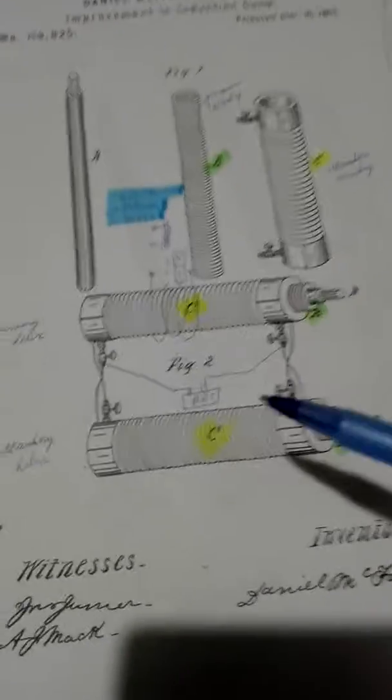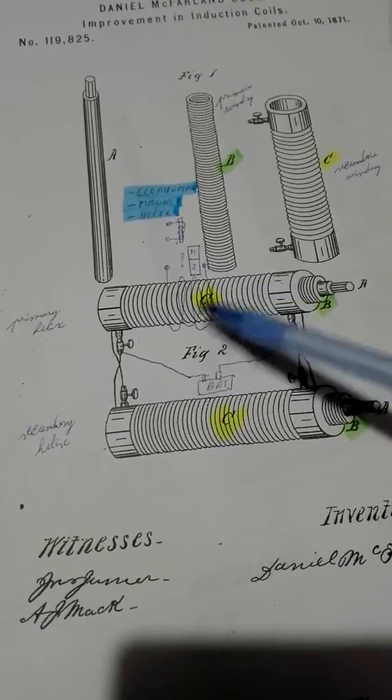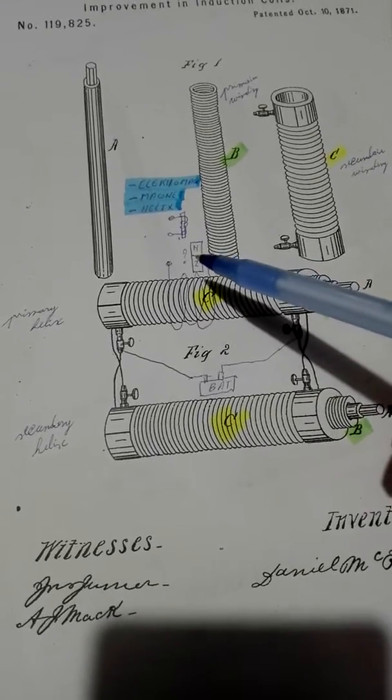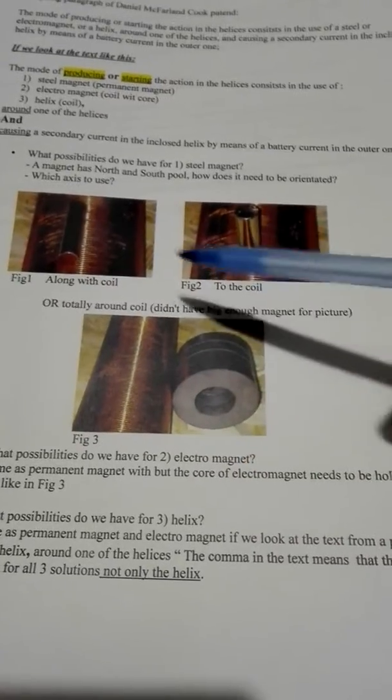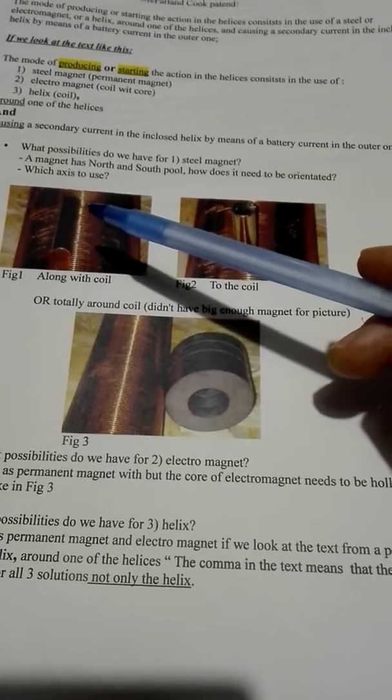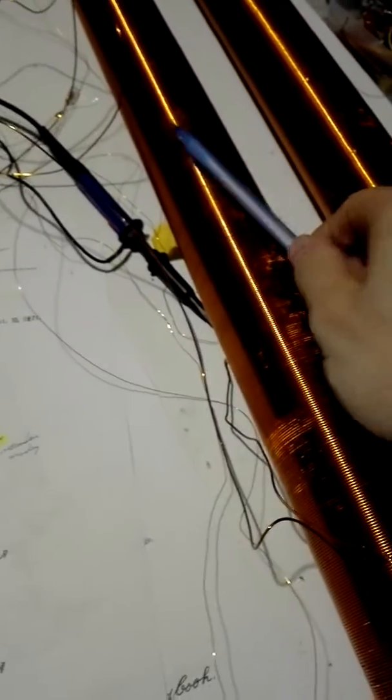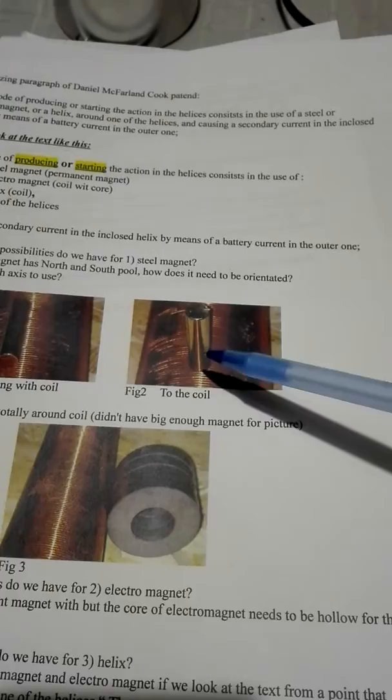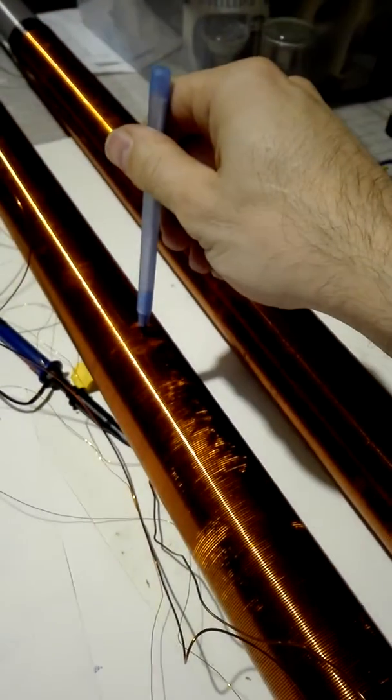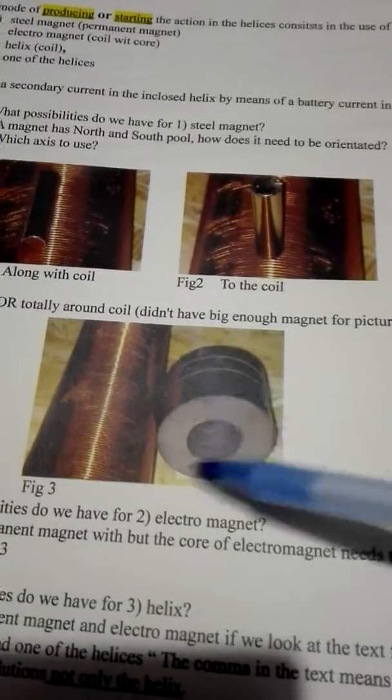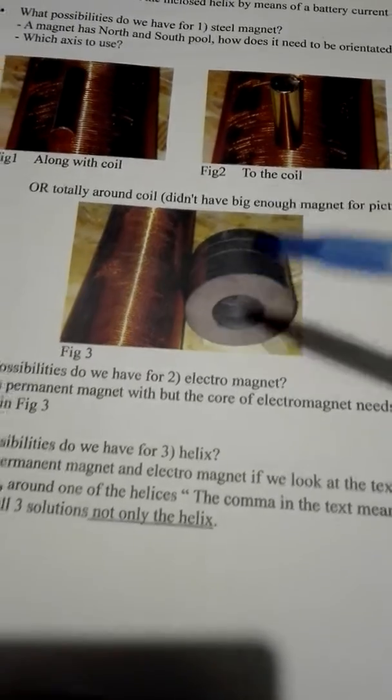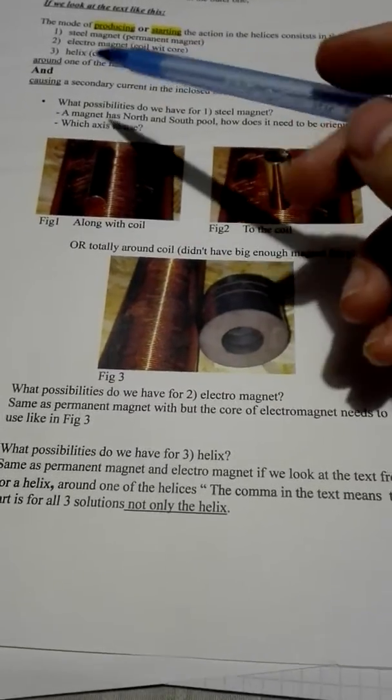So this means that if we take for example this one, we can wind a coil around it, and we can use a permanent magnet or an electromagnet. But then of course we can ask ourselves how do we need to place that magnet? Does it need to go in that way? So if you have here the coil, then we put it on this with the north and the south in one direction. Or do we put it on top to the coil like this? Or around. Now I didn't have a big enough magnet to go around the coils, but I use it only as an example on this picture. So that is how I understand this part.